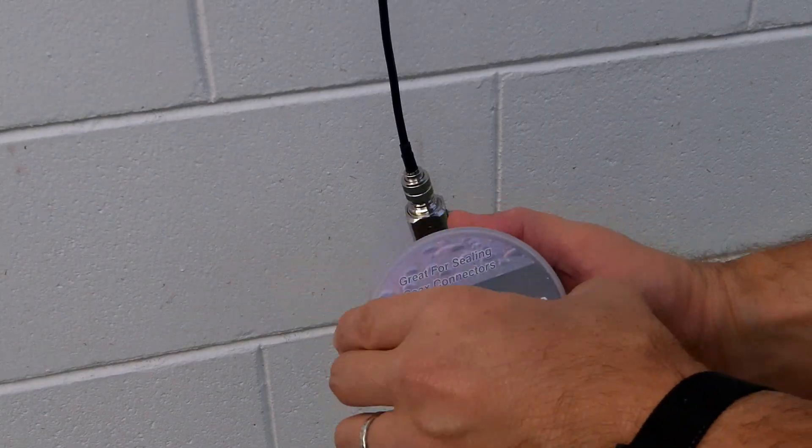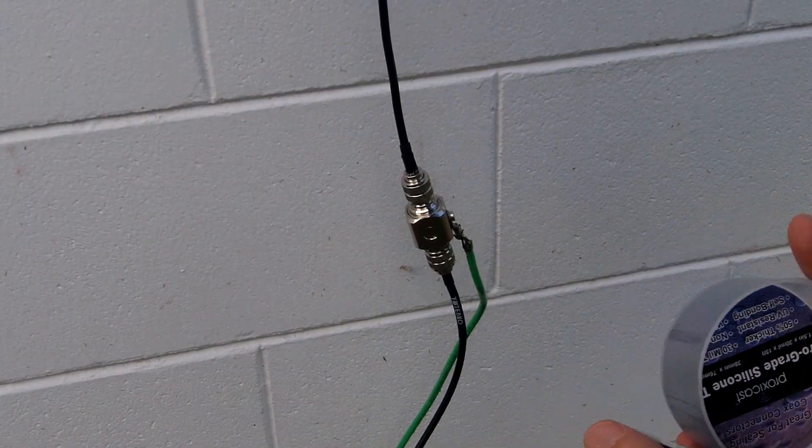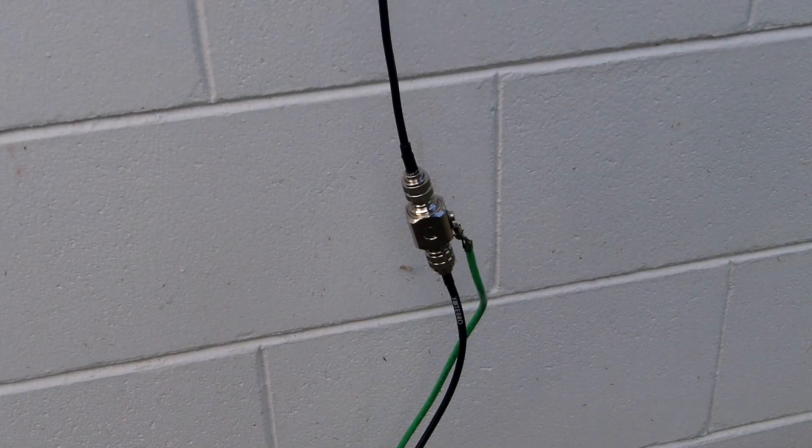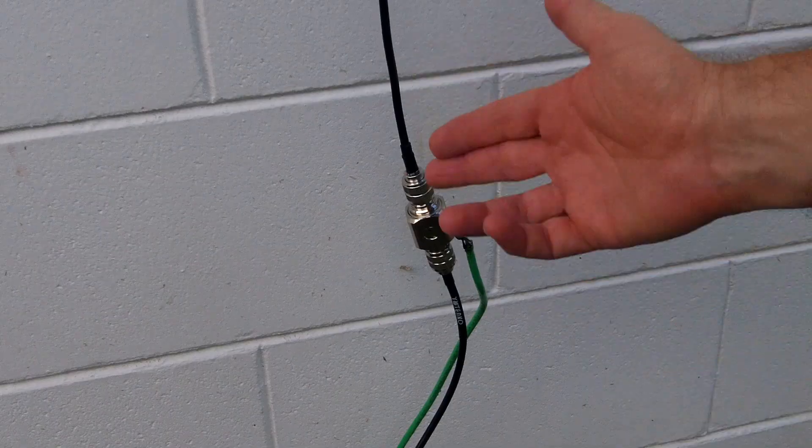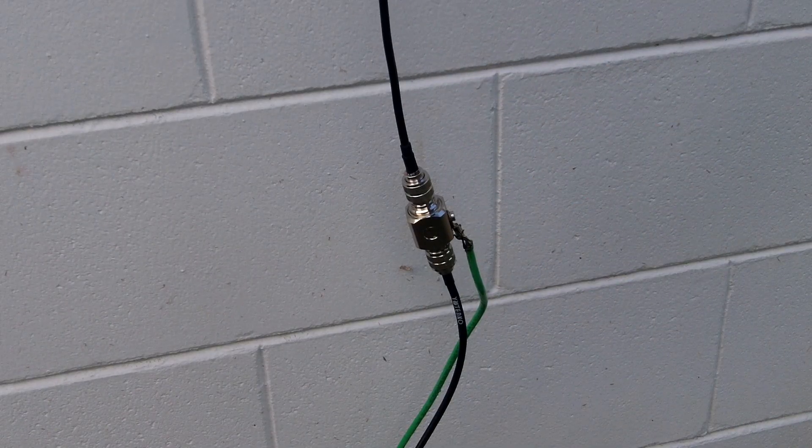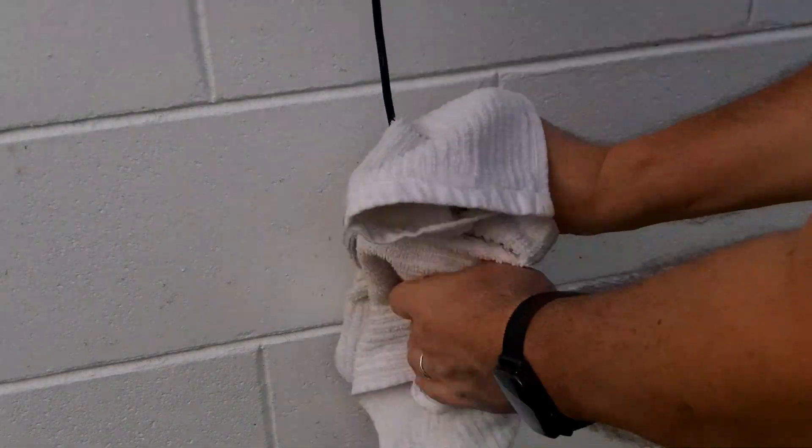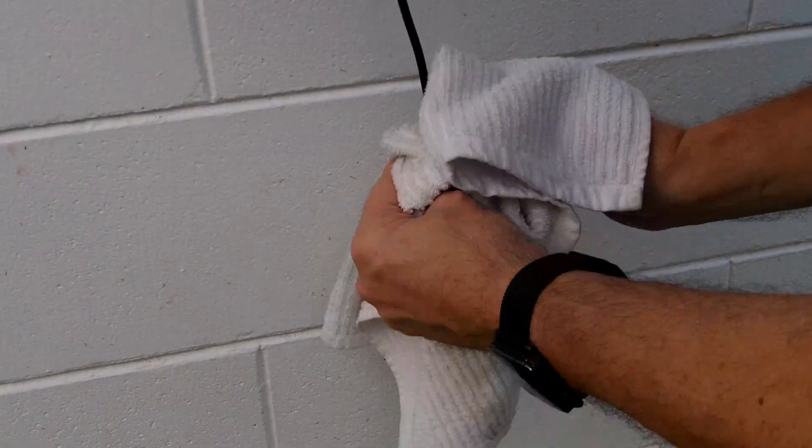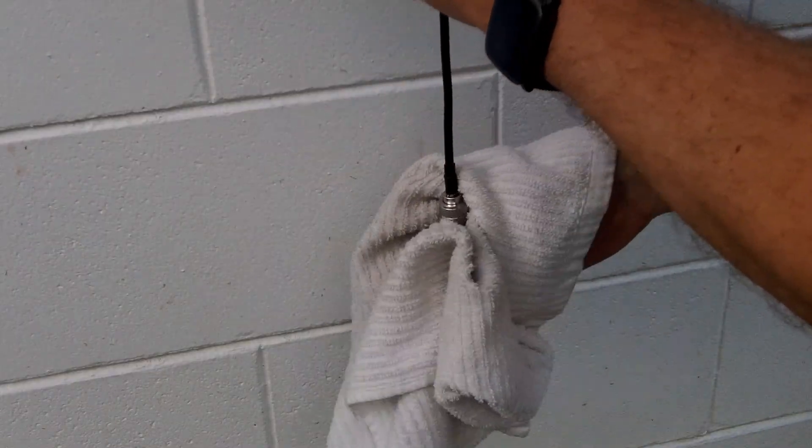Alright, this is silicone tape. We're going to use it to seal this lightning arrestor here. Ideally you don't want any connections out in the weather, but you kind of have to have a lightning arrestor outside your house. Before you put on silicone tape, you want to make sure that everything you're putting it on is clean and dry.